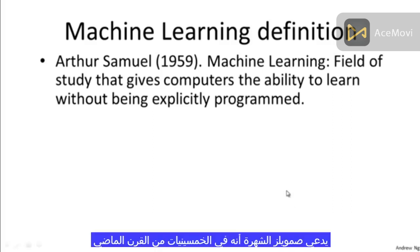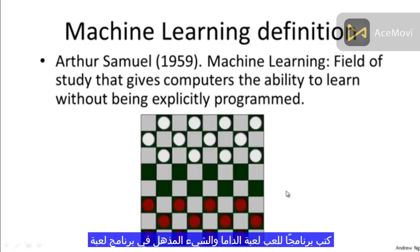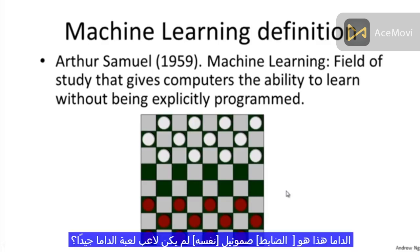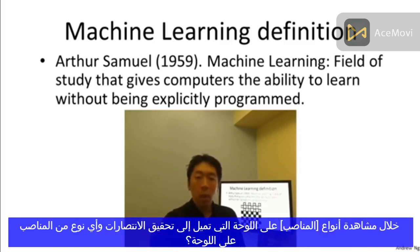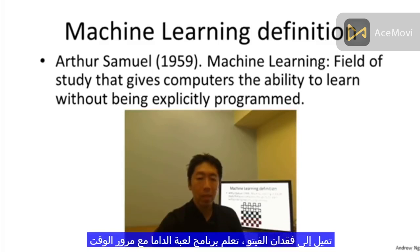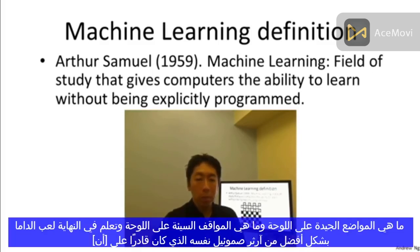Samuel's claim to fame was that back in the 1950s, he wrote a checkers playing program. And the amazing thing about this program was that Arthur Samuel himself wasn't a very good checkers player. But what he did was he had the program play tens of thousands of games against itself. And by watching what sorts of board positions tended to lead to wins and what sort of board positions tended to lead to losses, the checkers playing program learned over time what are good board positions and what are bad board positions.